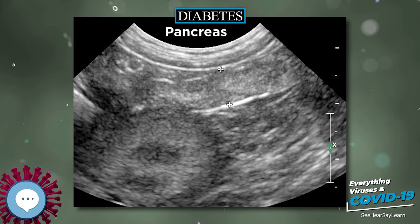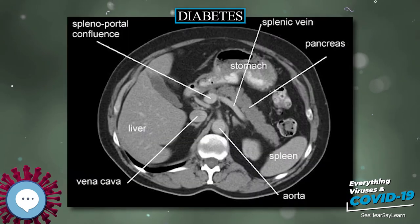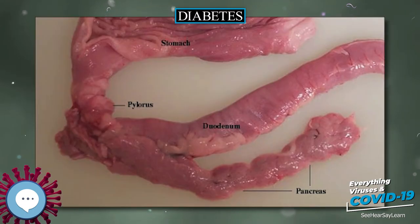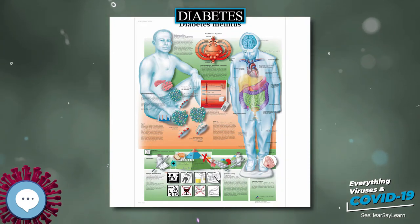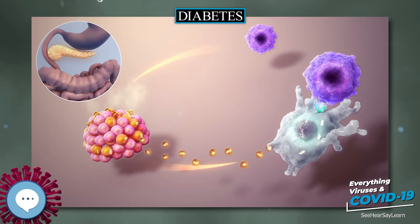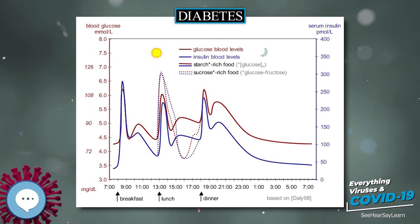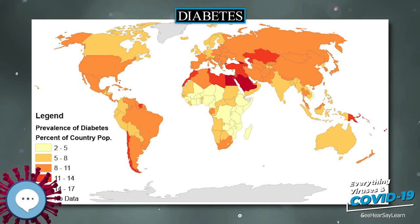Though it may be transient, untreated GDM can damage the health of the fetus or mother. Risks to the baby include macrosomia (high birth weight), congenital heart and central nervous system abnormalities, and skeletal muscle malformations. Increased levels of insulin in a fetus's blood may inhibit fetal surfactant production and cause infant respiratory distress syndrome. A high blood bilirubin level may result from red blood cell destruction. In severe cases, perinatal death may occur, most commonly as a result of poor placental perfusion due to vascular impairment. Labor induction may be indicated with decreased placental function. A cesarean section may be performed if there is marked fetal distress or an increased risk of injury associated with macrosomia, such as shoulder dystocia.